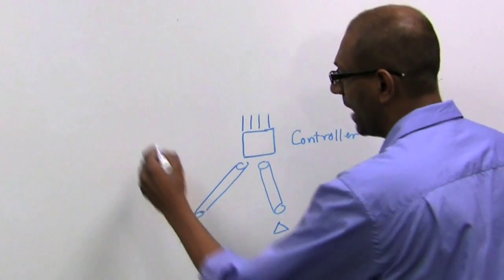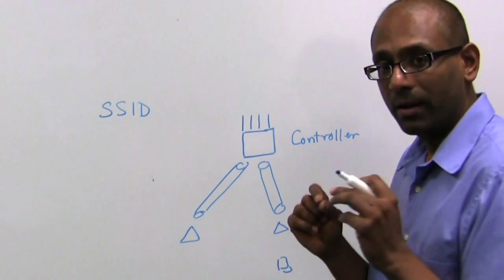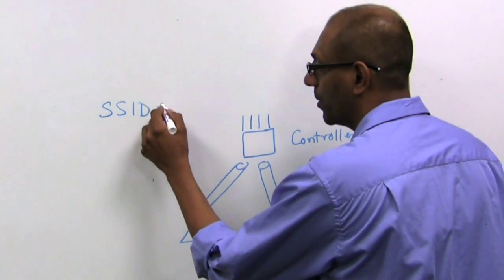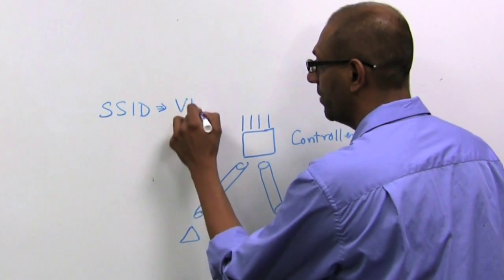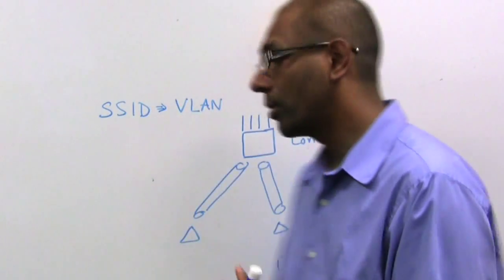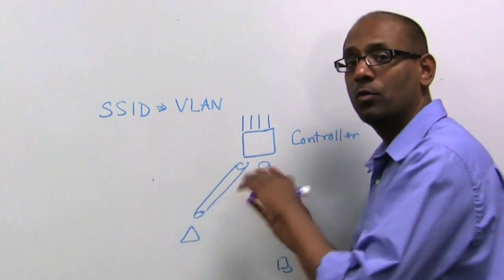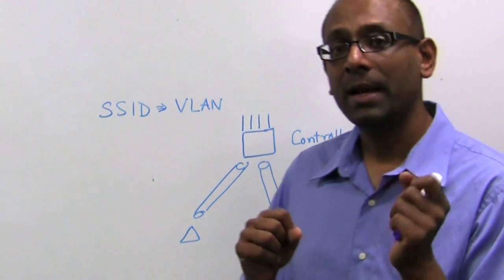So when we have an SSID, which is a wireless service, the default way in which packets are mapped from the wireless network to the wired network is by mapping an SSID to a VLAN. And a controller has multiple ports, and therefore, we have VLANs mapped to either the primary or the secondary port, so it's really a combination of VLAN and port mapping.